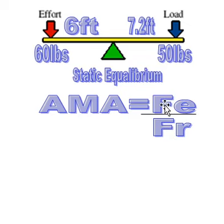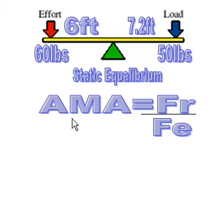I've got these backwards, don't I? So I've got to change these. So now that I've changed them, you can see that IMA is D of E over D of R, but AMA is F of R over F of E.